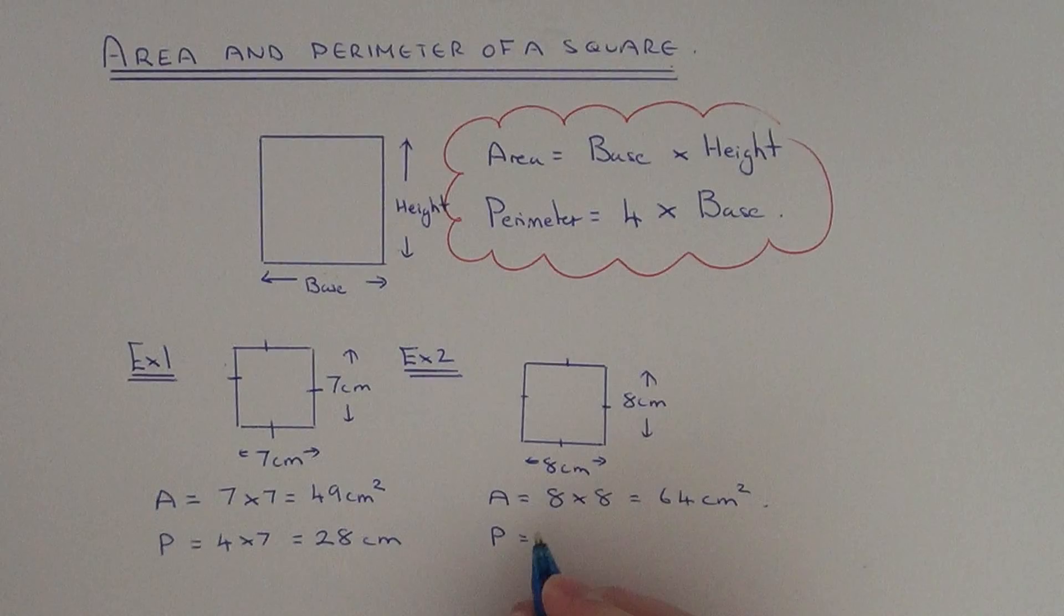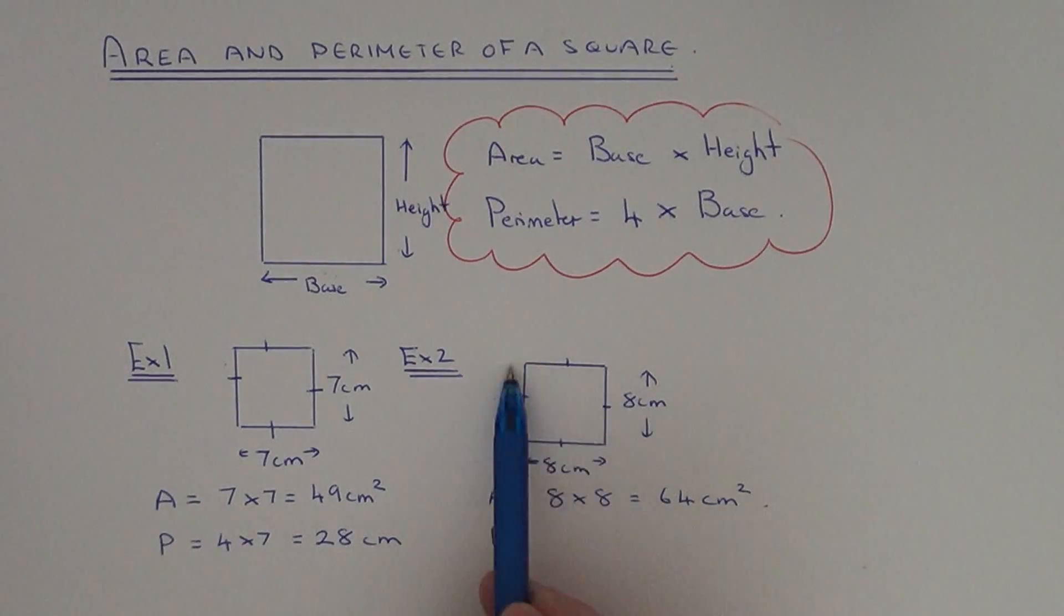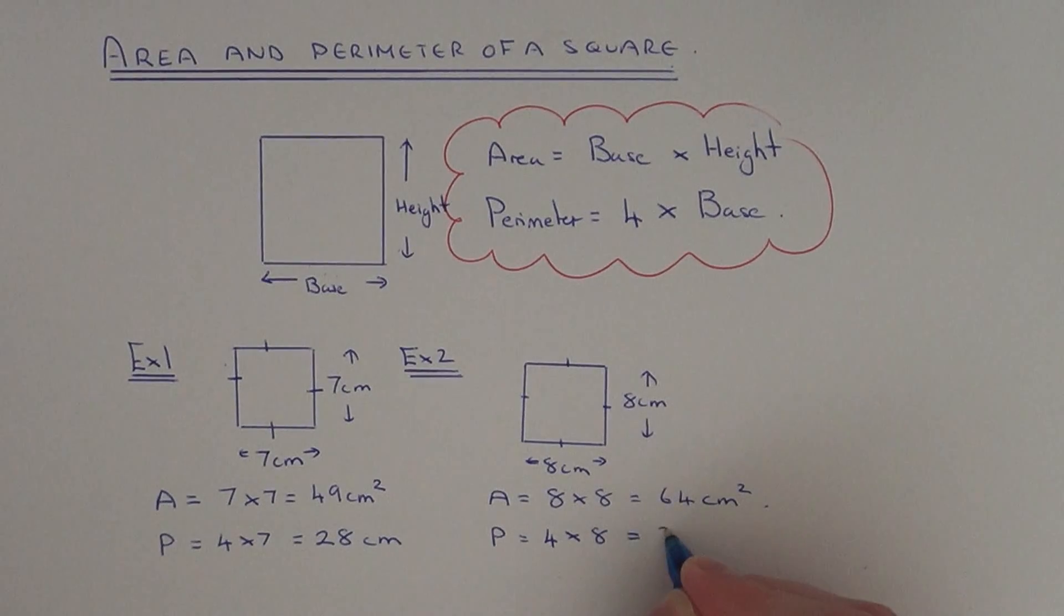And finally the perimeter. We just need to add all the sides up. We've got four of them, so we do 4 times 8, which is 32 centimeters.